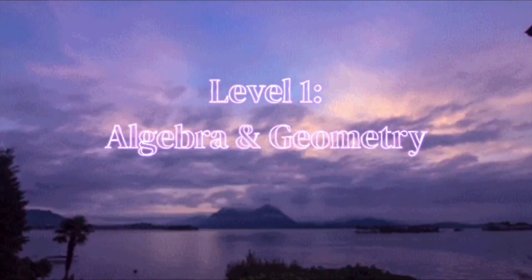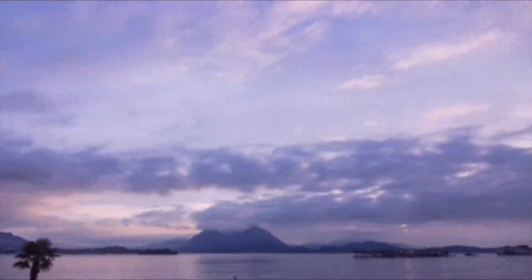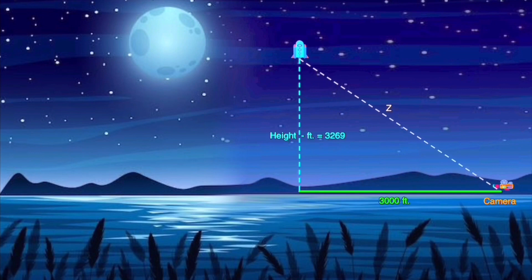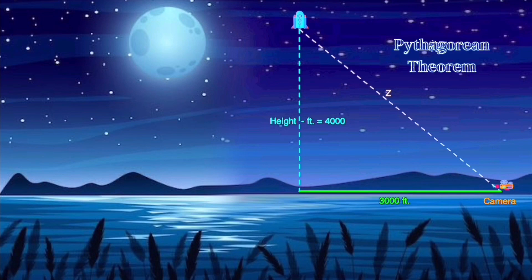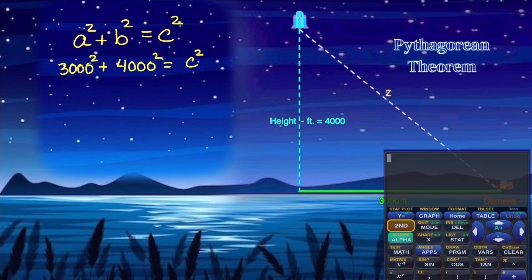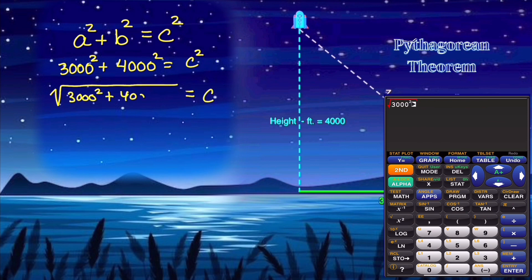Level one. A camera is placed 3,000 feet from a rocket launch pad. The rocket will be rising at a rate of 880 feet per second when it is 4,000 feet in the air. What is the distance from the camera to the rocket at this instance in time? Pause the video now to figure it out. Using the Pythagorean theorem, a squared plus b squared equals c squared in this right triangle, we have 3,000 squared plus 4,000 squared would equal c squared. And taking the square root of both sides allows us to find what c is equal to.